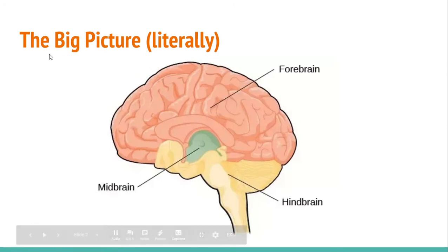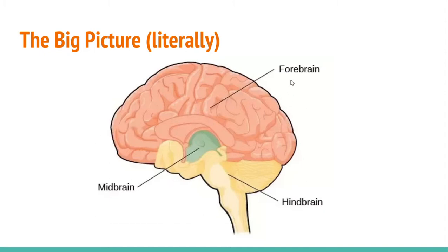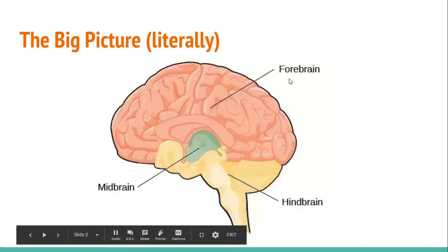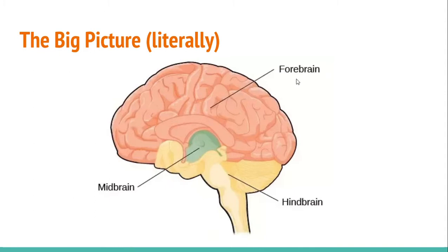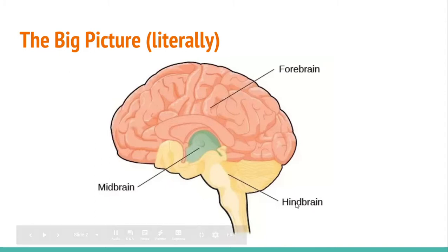Here I've given a big picture of the brain, literally, pointing out the three major parts: the forebrain, the midbrain, and the hindbrain. These all have different scientific names associated with them. The forebrain's scientific name is the prosencephalon, the midbrain's is the mesencephalon, and the hindbrain's is the rhombencephalon. Each of these three parts carries out different functions and plays different roles.